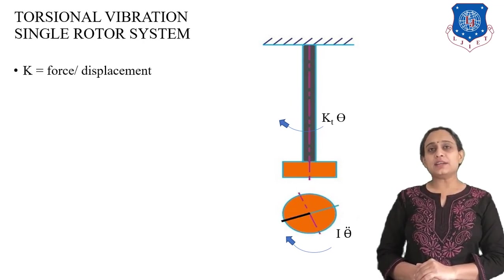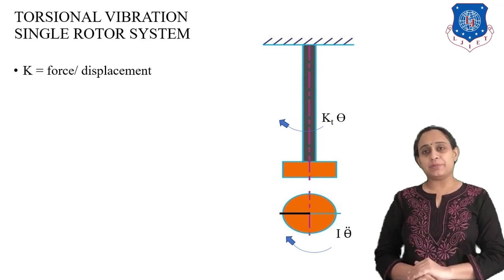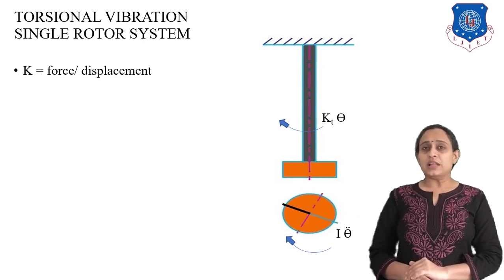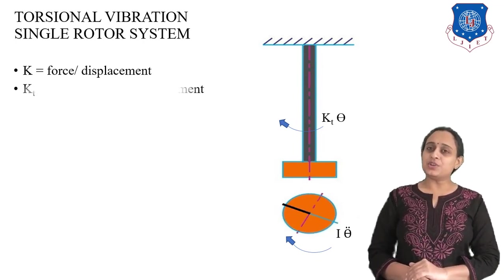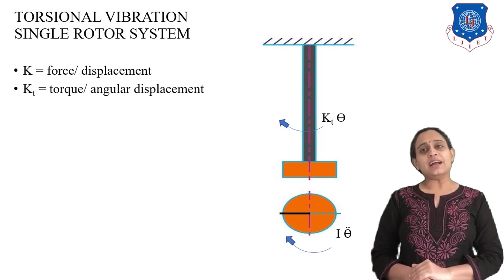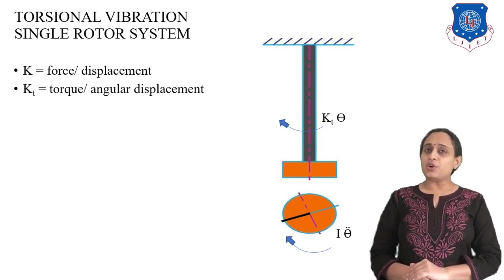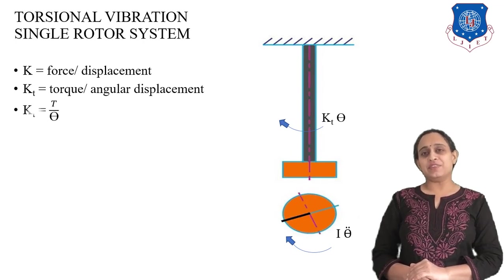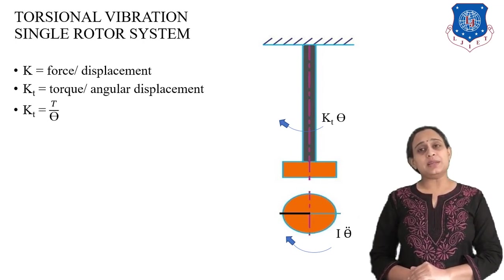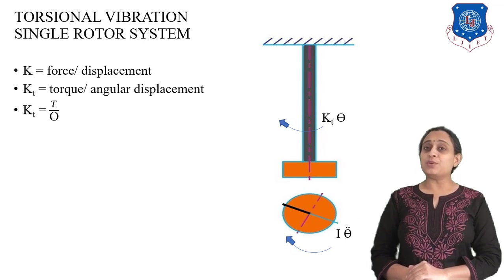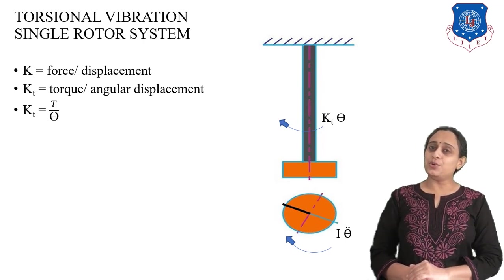We know that K equals force divided by displacement. So torsional stiffness KT equals torque divided by angular displacement, giving KT = T/θ, and therefore torque equals KT·θ.